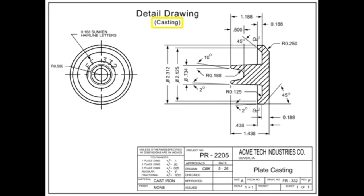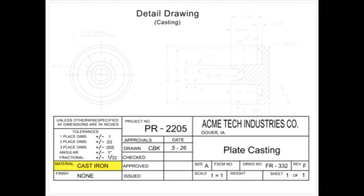A casting drawing is a type of detail drawing for parts made by casting or molding. The material for the part is typically called out in the material block, although it can sometimes be found in the notes section.